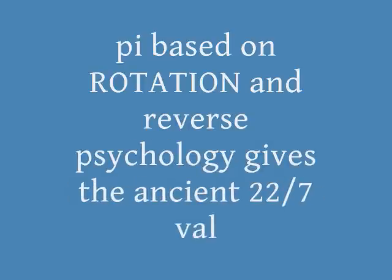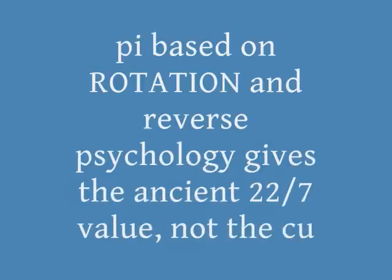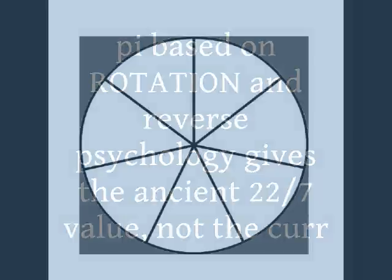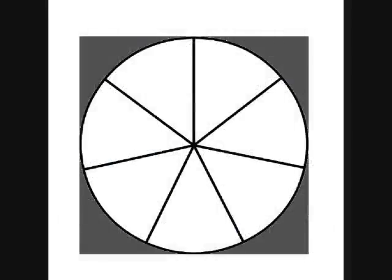Hi, Pi, P-I, has been considered to be 3.14159 dot dot dot, since approximately 300 B.C.